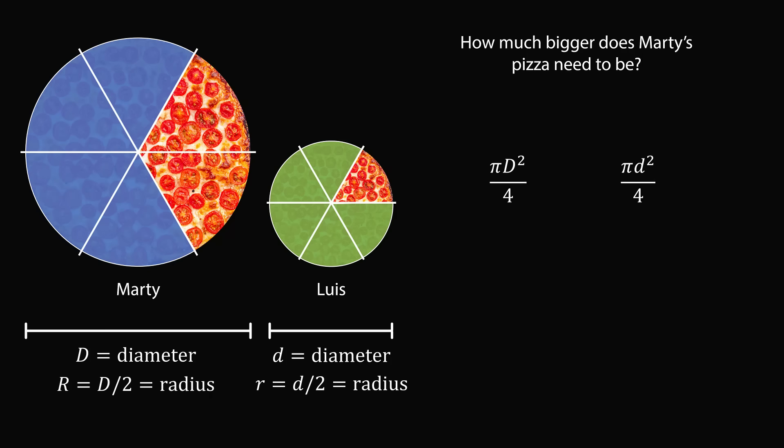So now let's compare how much Marty ate to how much Luis ate. So Marty ate 4 sixths of his pizza, and Luis ate 5 sixths of his pizza. We need Marty to eat at least as much as Luis, so we have a greater than or equal to here. Now let's simplify this inequality. The pi terms will cancel out because pi is baked into both formulas. We can now cancel out the denominators of 4 and the denominators of 6. This simplifies to be 4 multiplied by large D squared is greater than or equal to 5 multiplied by little d squared.